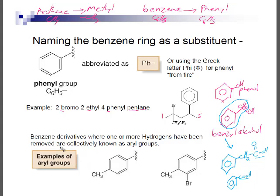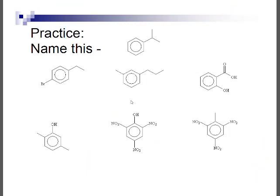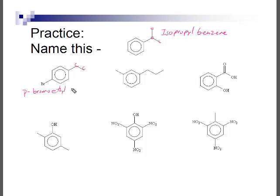Compounds that are derivatives of benzene — where one or more ring hydrogens have been replaced by substituents — are known as aryl compounds. Let's name some examples. An isopropyl group attached to benzene is simply isopropylbenzene. A disubstituted ring with an ethyl group and a bromo across the ring from each other is para-bromoethylbenzene, or 1-bromo-4-ethylbenzene.